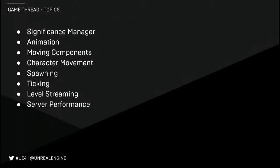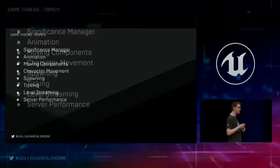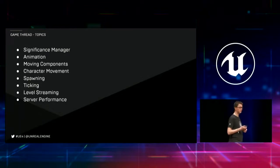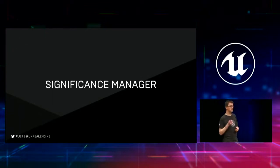Here are the topics I'm going to be talking about today. First, I'll introduce something called the Significance Manager, which is what we use to handle very dynamic combat situations. We'll talk about animation, which is a big part of the work with so many players. We'll talk about moving components, in particular character movement. We'll talk about spawning things and systems ticking every frame. We'll also talk about level streaming, which we added a bit later in development. And we'll talk about server performance at the end. So first, I'm going to introduce the Significance Manager.